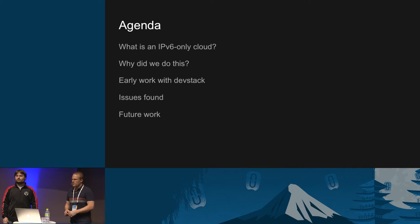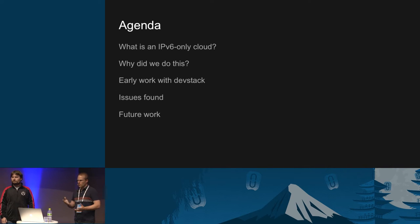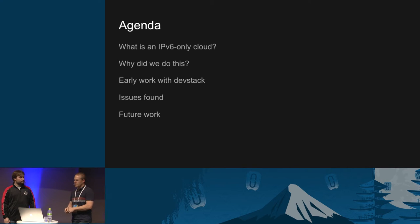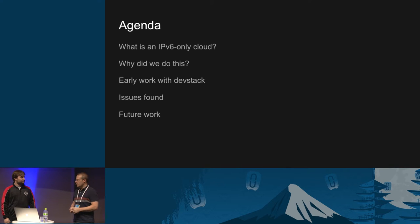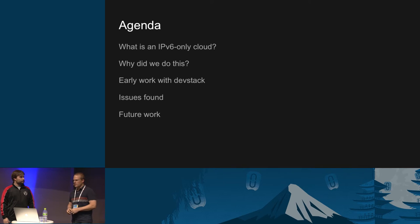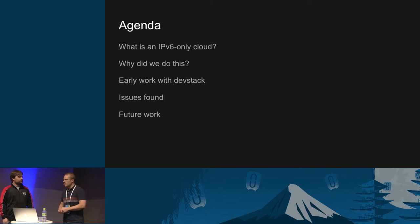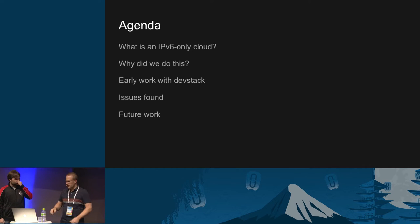So first, a quick agenda. First, we want to talk about what we mean when we talk about an IPv6-only cloud — there are maybe a couple of interpretations of that. And then, second, why did we do this work? Some of the early work with DevStack that Sean and I did with some others. We'll cover some of the issues we found and then talk about future things we're working on in the Metaka cycle.